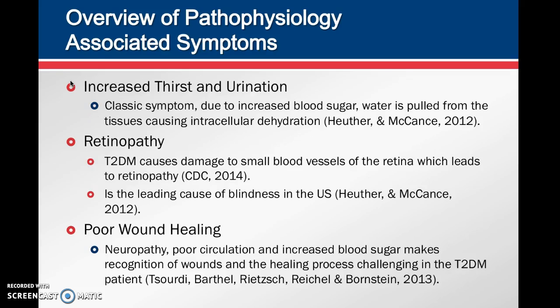When diagnosing type 2 diabetes, a classic presenting symptom is increased thirst and urination. This happens due to increased blood sugar causing water to be pulled from the tissues, leading to intracellular dehydration, which in turn causes the increased thirst and urination.